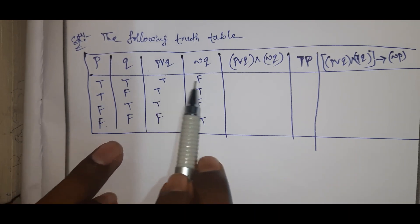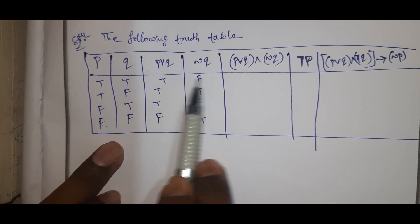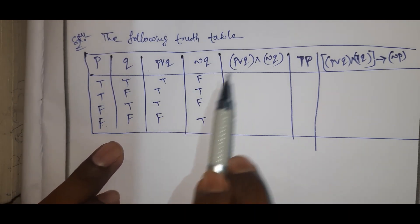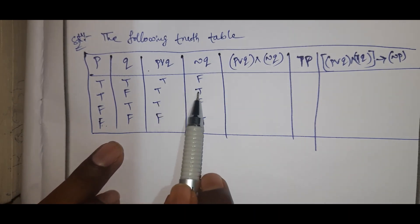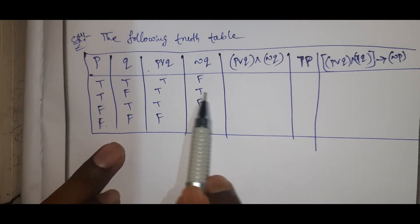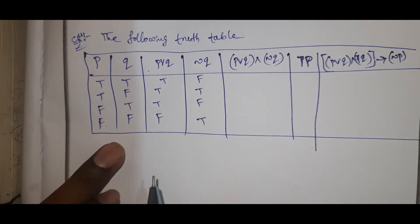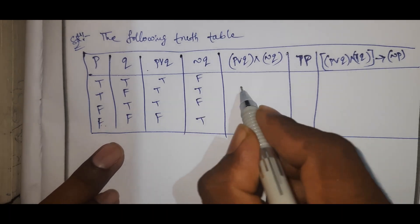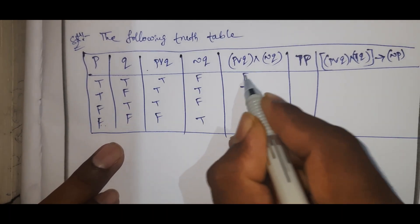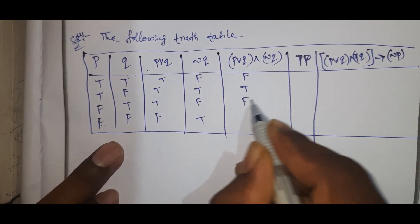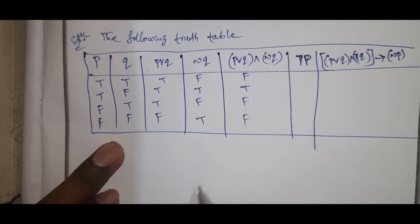For P AND Q AND negation Q: any two statements false means the AND result is false. The values are: false, false, false, false.